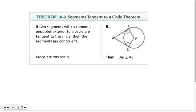This theorem introduces what the next example is about. If you have two segments with a common endpoint — that's point A in this picture — and both lines going out from that endpoint are tangent (so we have those 90-degree angles), then a cool fact is that those two tangent lines are congruent. That makes setting up problems really nice.